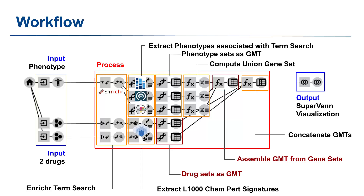To get a comprehensive gene set, we calculate the union of all the phenotypes. Next, we extract L1000 chemical perturbation signatures for the two drugs from the Enrichr term search results. Finally, we convert the drug set into GMT format and concatenate the drug GMT file with the assembled GMT file from the phenotypes, creating a combined GMT file.